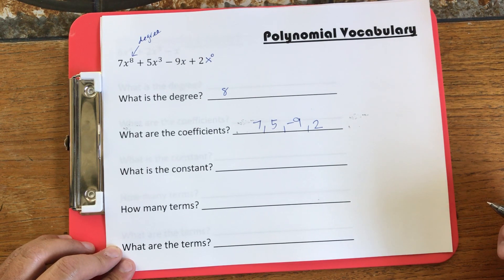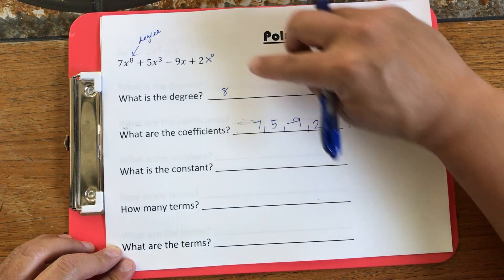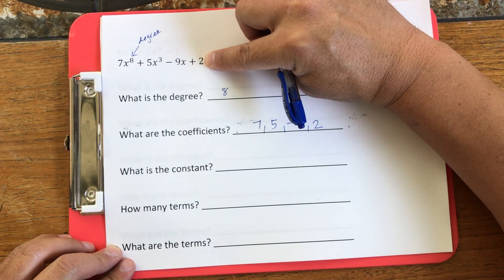The constant is the degree 0 term. Or if I didn't write this, it's the number that's all by itself.